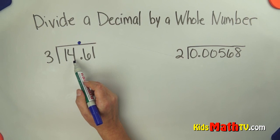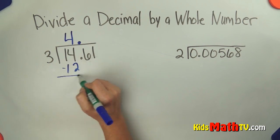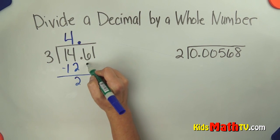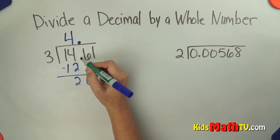4 times 3 is 12, subtract. That's 2. Bring down the 6 and I don't have to worry about my decimal anymore. I don't have to bring it down. How many threes in 26? 8.